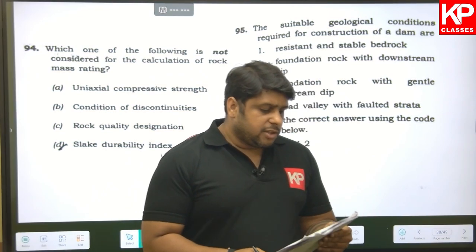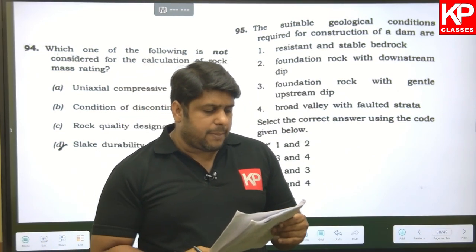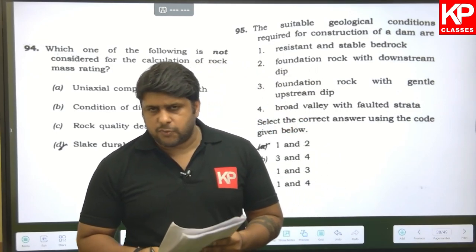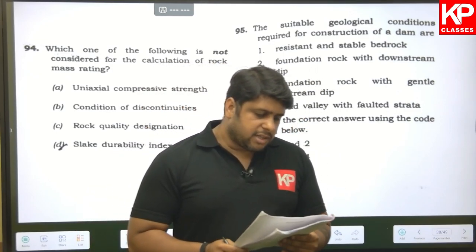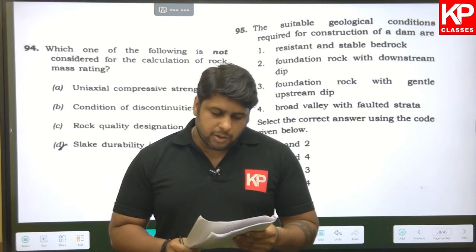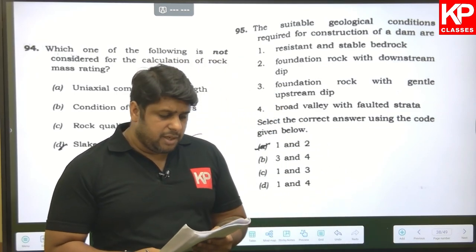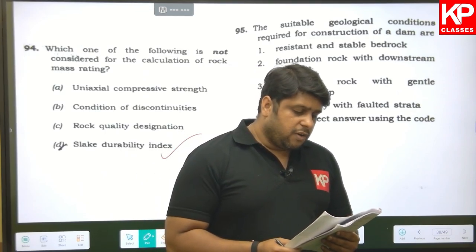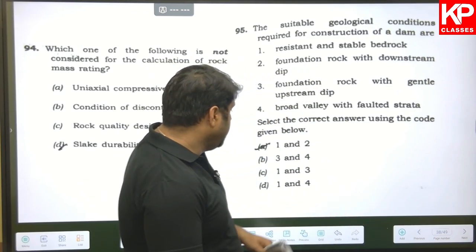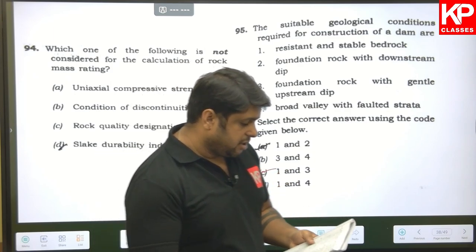Question ninety-six: suitable geological conditions for dam construction — resistant and stable bedrock (required). Foundation rock with downstream dip — we do not need downstream dip, we need upstream dip. Foundation rock with gentle upstream dip (correct). So statements one and three are the answer, and C is correct.